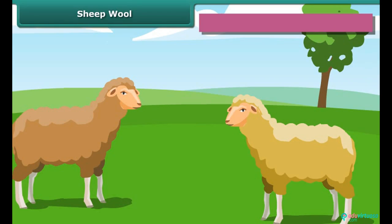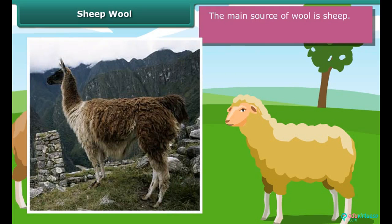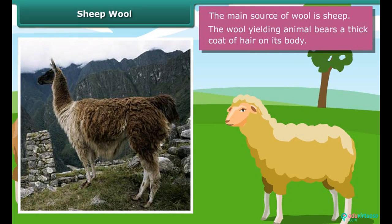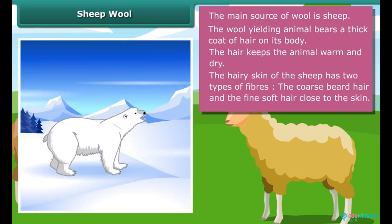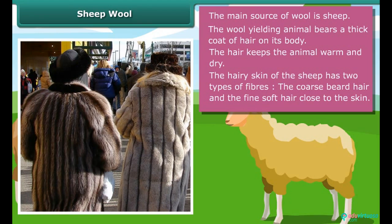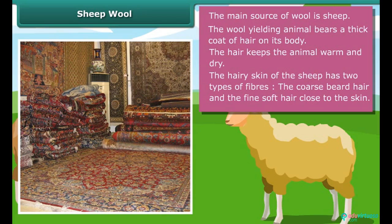The main source of wool is sheep. The wool-yielding animal bears a thick coat of hair on its body. The hair traps air, and since air is a poor conductor of heat, the hair keeps the animal warm and dry, allowing it to live in cold and harsh climates. The hairy skin of the sheep has two types of fibers: the coarse beard hair and the fine soft hair close to the skin. The fine hair provides fibers for making woolen clothes, while the coarse hair provides wool for making carpets.